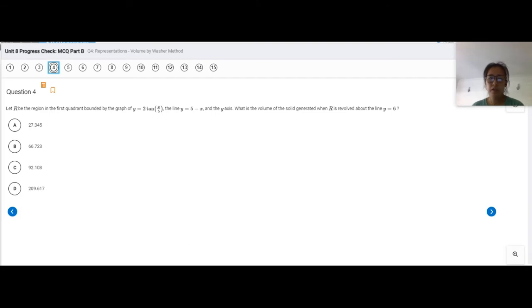Okay, so we're going over number four, and the question is in front of us right now. So it says, let R be the region in the first quadrant bounded by the graph of Y equals 2 tangent of X over 5 and the line Y equals 5 minus X and the Y axis.